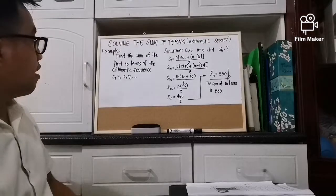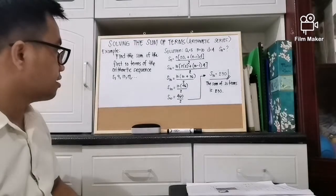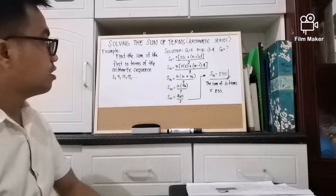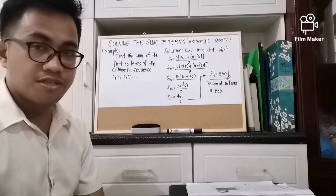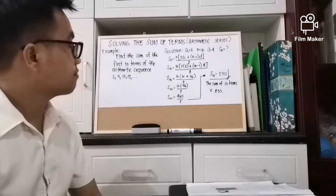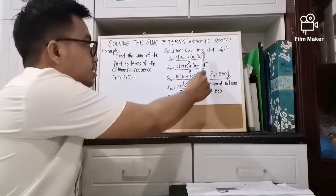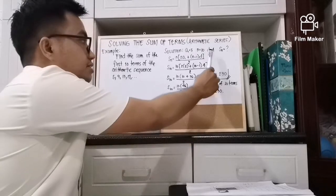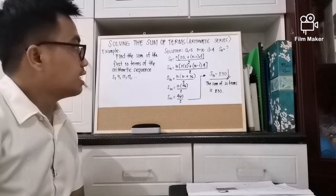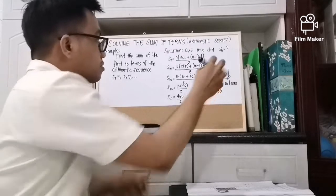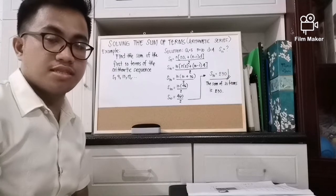Example: find the sum of the first 10 terms of the arithmetic sequence 5, 9, 13, 17, and so on. To solve this, we apply the formula. First, identify the given: the first term is 5, the number of terms is 10, the common difference is 4, and the sum of terms is unknown.